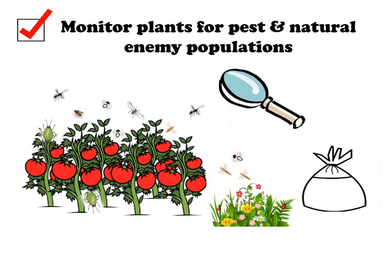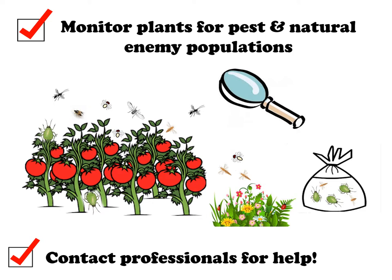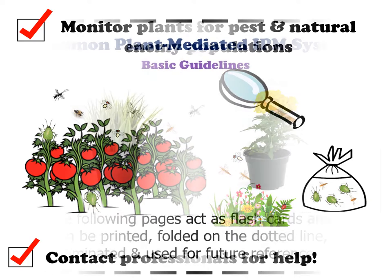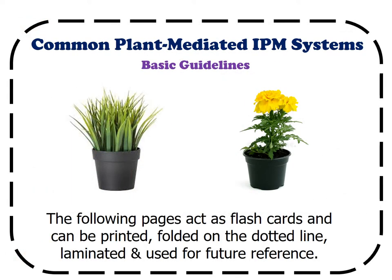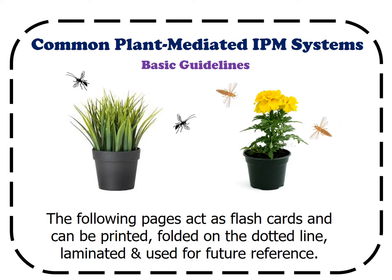If unsure of what insect is present, collect a bag of specimens or take clear pictures and contact your local university extension agent for assistance. Now that you have a basic knowledge of some common systems, we can briefly discuss some guidelines so you can successfully integrate them into production. The following pages can act as flashcards and can be printed, folded on the dotted line, laminated, and used for the future.